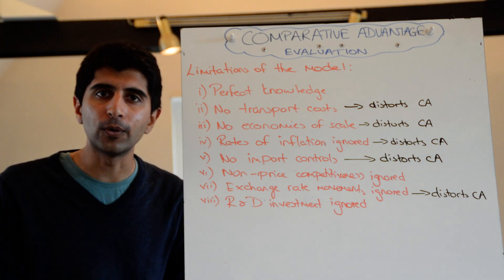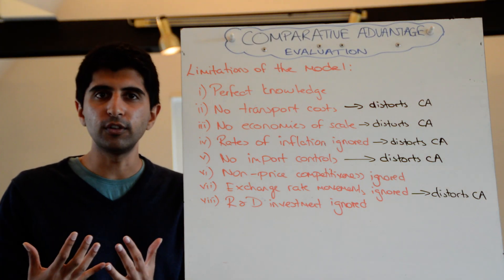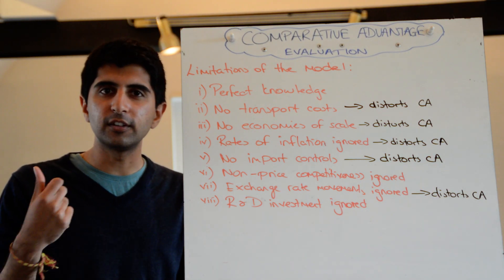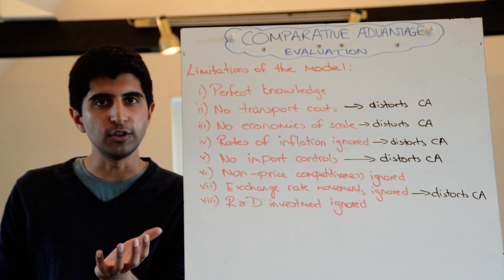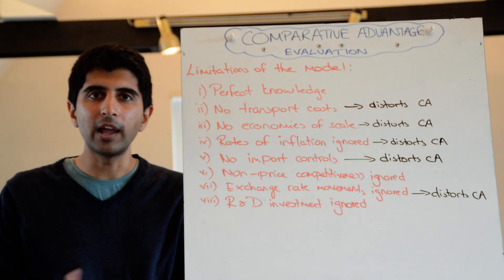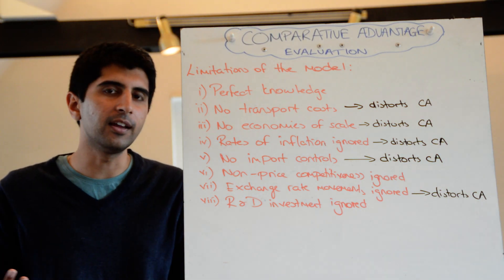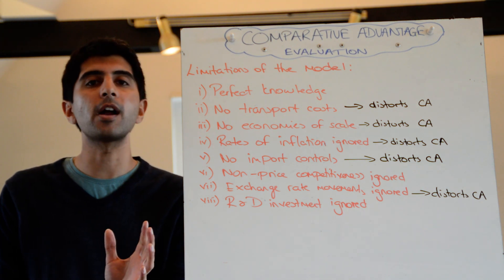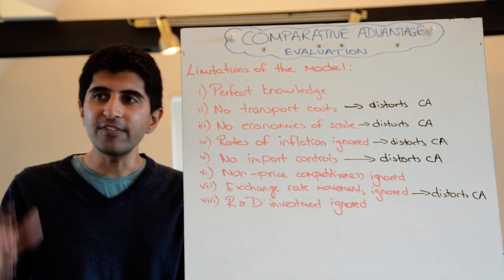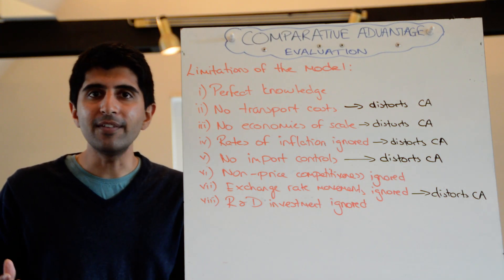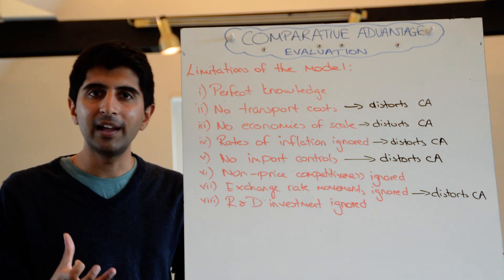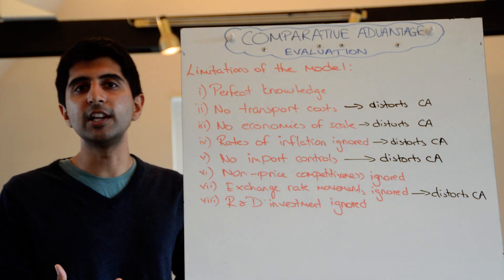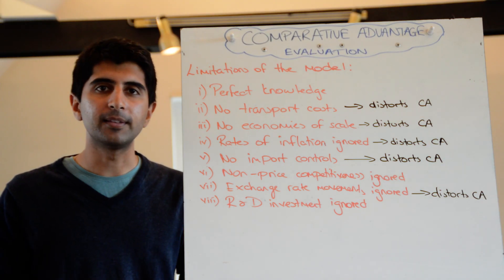And finally, what about R&D? R&D investment is ignored. This is why in the real world you have lots of different countries producing similar goods and services — each country may invest in different levels of research and development spending, meaning the final product produced might be slightly different. That explains why lots of different countries produce cameras or computers. It can also lead to countries that don't have a comparative advantage ploughing money into R&D, innovating, producing brand new products, patenting those products, and therefore gaining a monopoly in that market — dominating it even without the original comparative advantage.